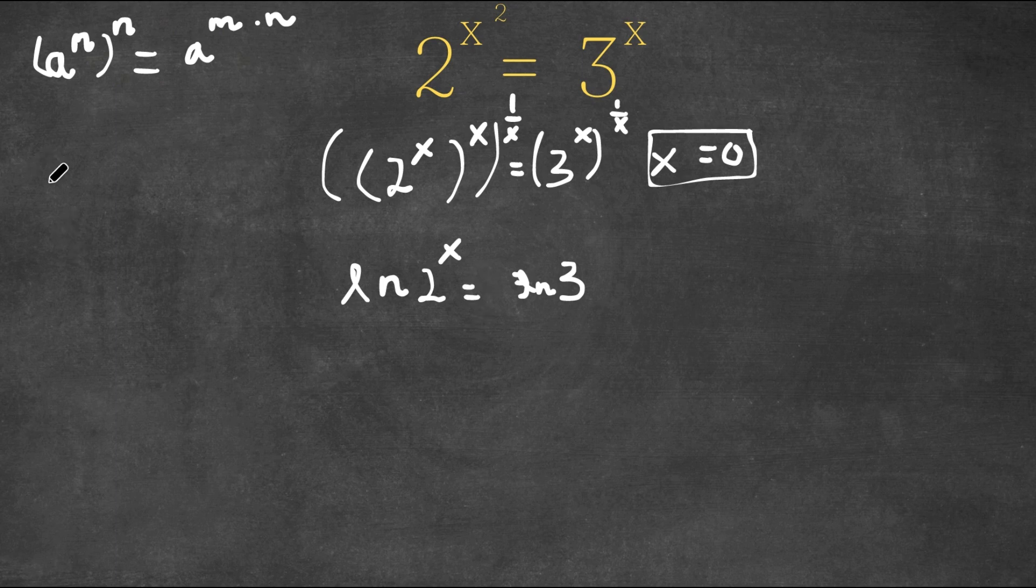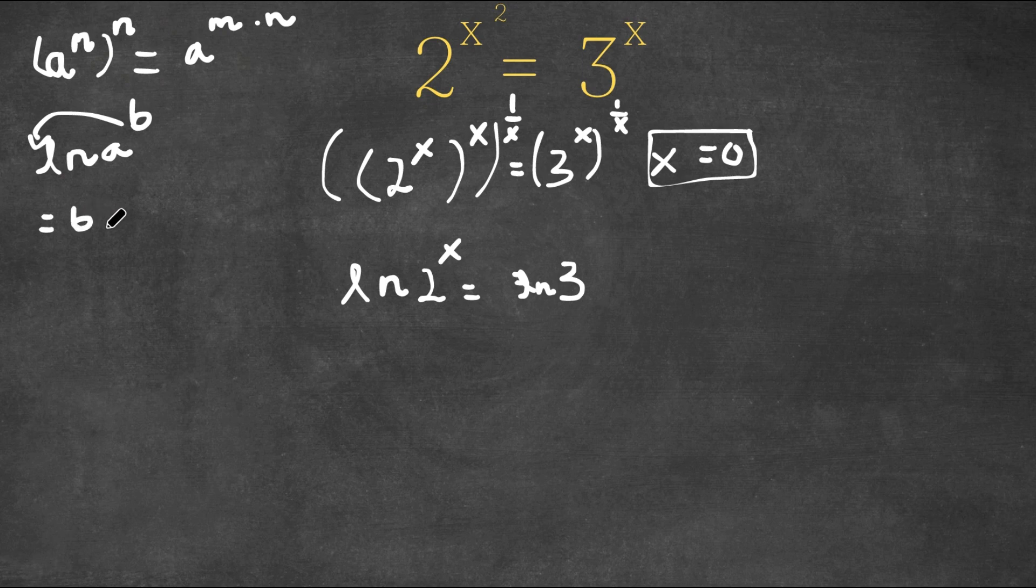And an important property of logarithms is that if we have ln of a to the power of b, we can actually move the exponent, which in this case is b, to the front of the logarithm. So this would actually equal b times ln a.